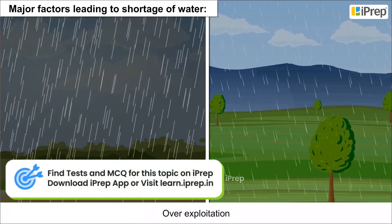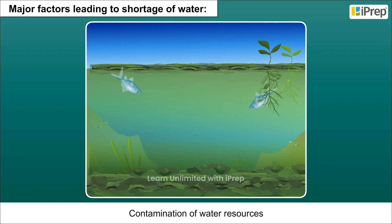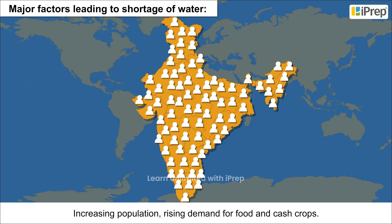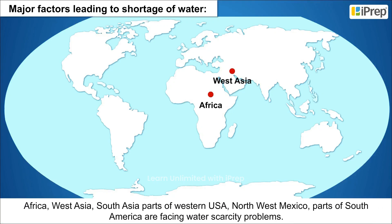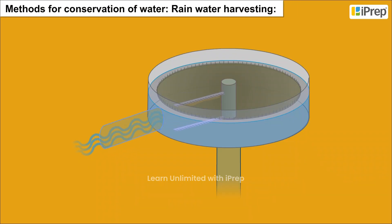Major factors leading to shortage of water include: variation in seasonal or annual rainfall, overexploitation, contamination of water resources, increasing population, and rising demand for food and cash crops. Africa, West Asia, South Asia, parts of Western USA, Northwest Mexico, and parts of South America are facing water scarcity problems.